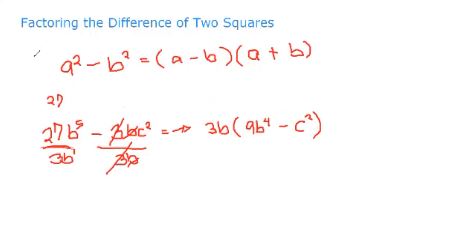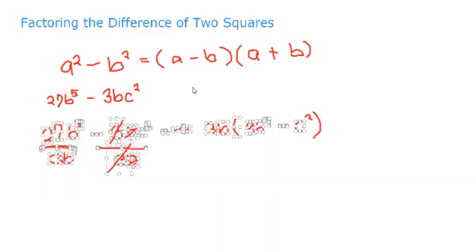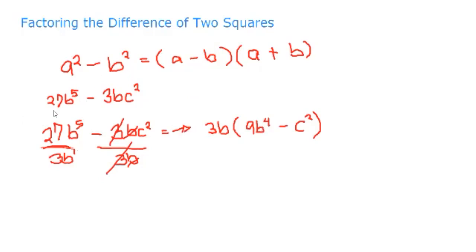So we have 27b raised to 5 minus 3bc squared, and we factored out 3b. Inside, we have 9b raised to 4 minus c squared. Now 9b raised to 4 minus c squared is the difference of two squares — it is in the form a squared minus b squared.